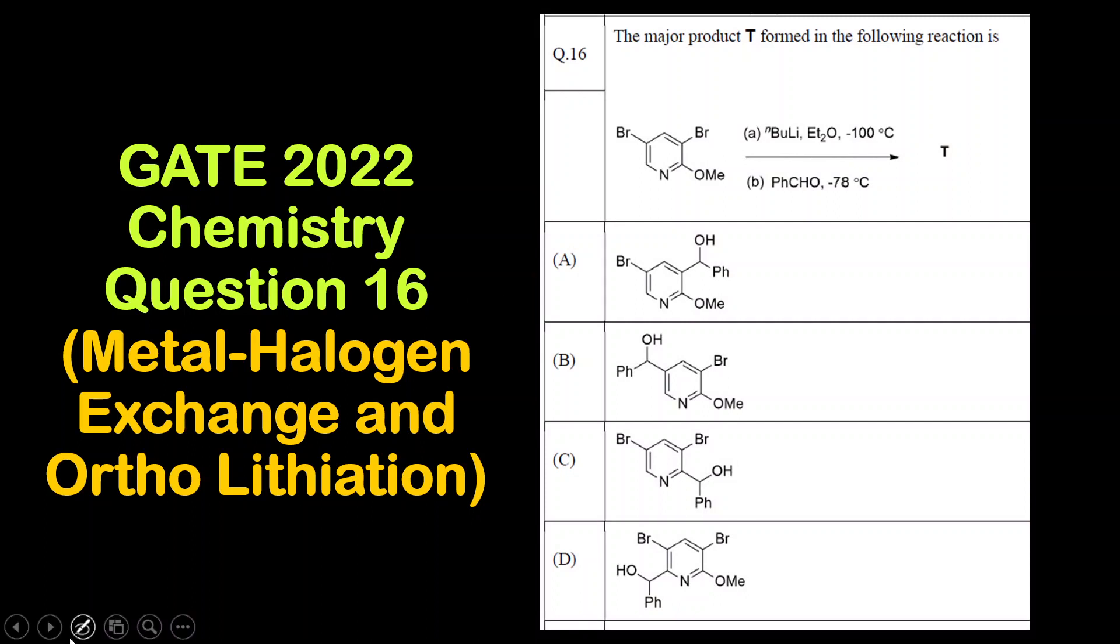This is the reactant that is given and we have to find out the product. There are two steps. First is reaction with butyl lithium - this is alkyl lithium and the R-group is the butyl group. Then after the metal-halogen exchange and ortholithiation, the second step is reaction with benzaldehyde.